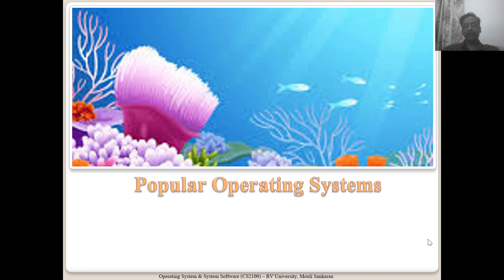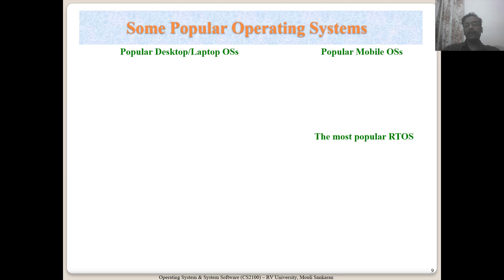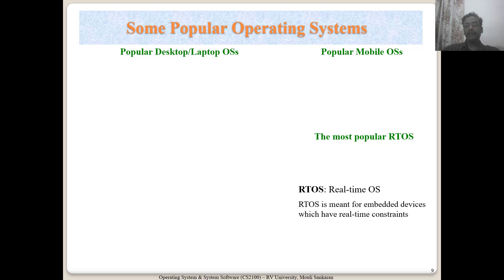Now let us look at what are the popular operating systems in the market. Some of them are desktop or laptop OS, and some are mobile OS. We will also see real-time operating systems, which are meant for embedded devices. They have real-time constraints and need to make sure that deadlines are always met.